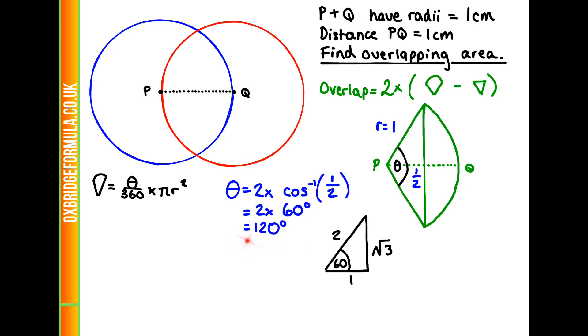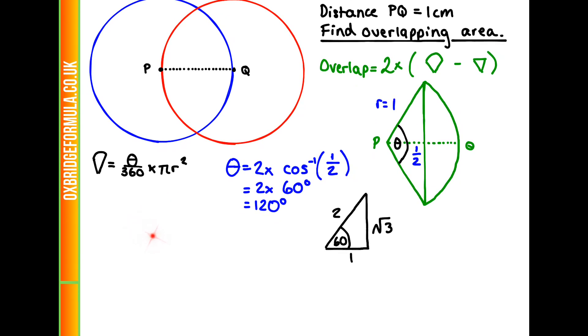So now we can plug our numbers into our equation. We're going to get 120 over 360 times pi times 1 squared, or 1 third pi. So that is our arc.